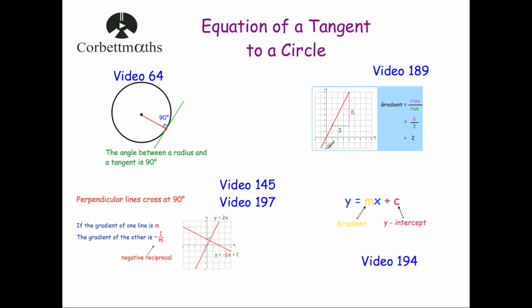Next, you need to know how to find the gradient of a line — that's video 189 on Corbett Maths. It's found by rise over run: divide the rise by the run to find the gradient. If you're already familiar with that, fantastic; if not, give yourself a refresh on video 189.